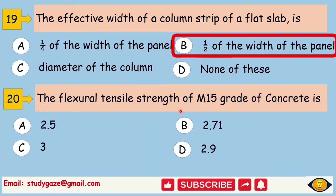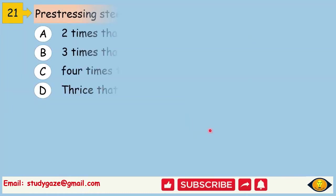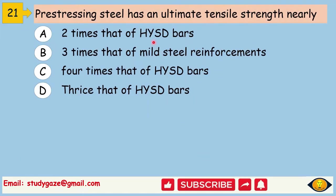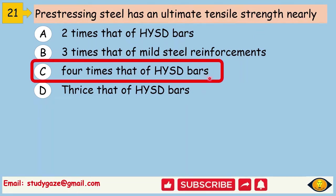The flexural tensile strength of M15 grade of concrete is. Answer is 2.71. We will calculate it. Flexural tensile strength is equal to 0.7 under root FCK. So, by using this formula, we will get 2.71 answer. Pre-stressing steel has an ultimate tensile strength nearly. Answer is 4 times that of HYSD bars.